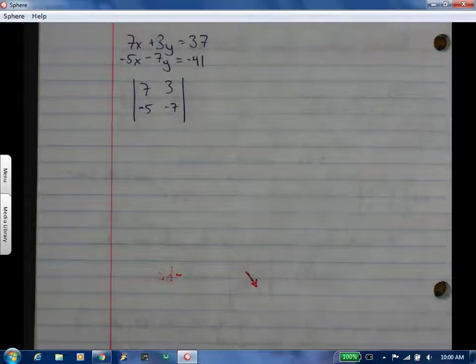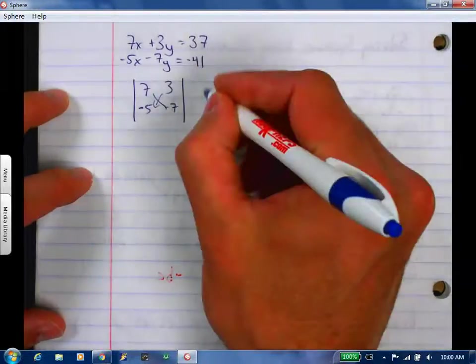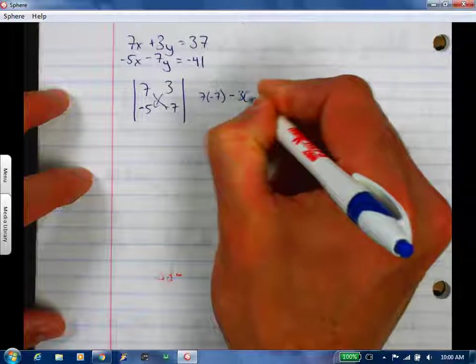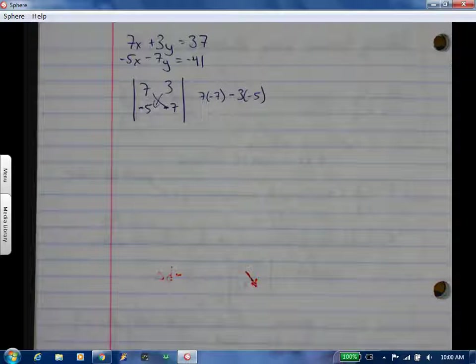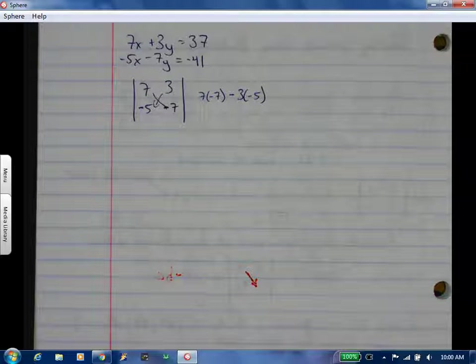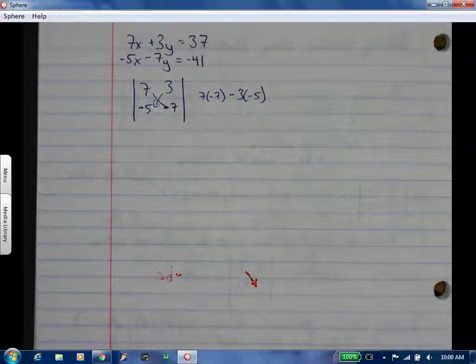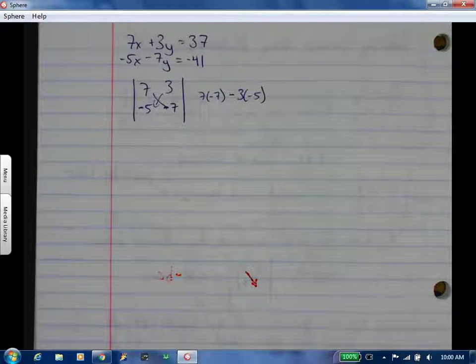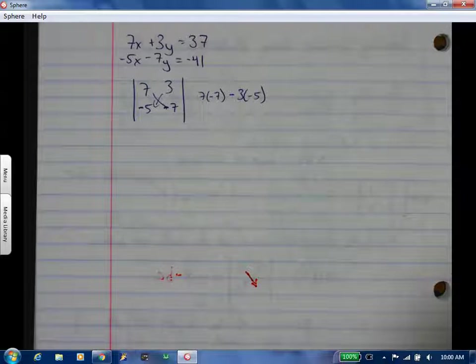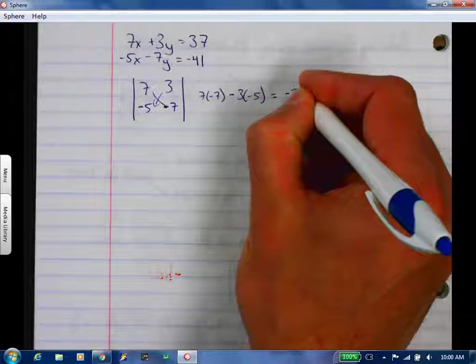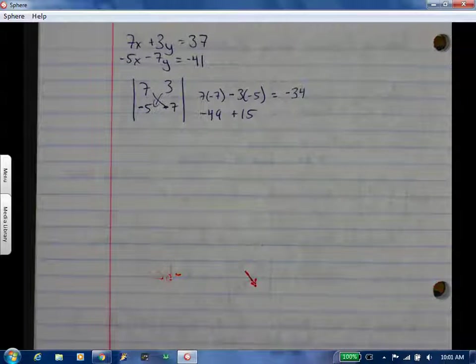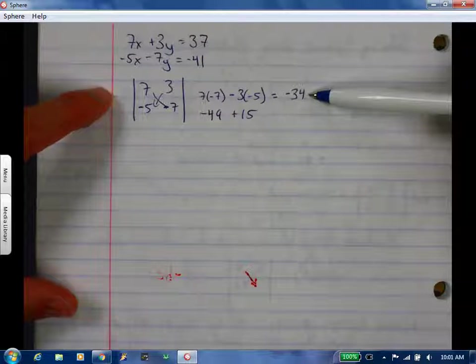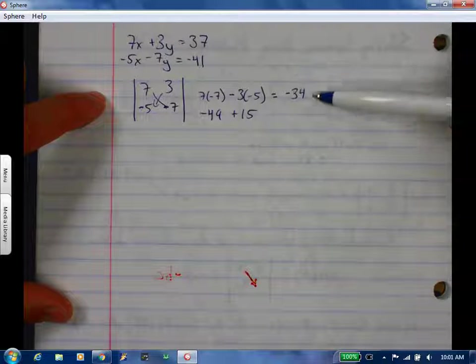You're going to use the diagonals. 49 and 15. It should be negative 49 plus 15, negative 34. This is our coefficient. This is what we'll be dividing by. This takes the place of that 29 from our last problem.